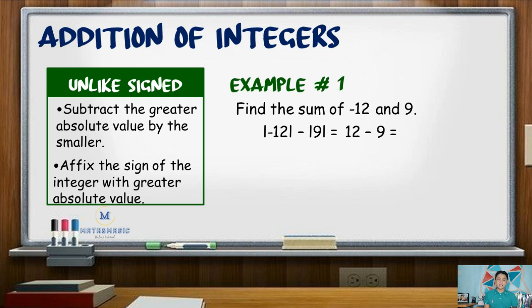Since the absolute value of negative 12 is higher, we copy the sign of 12, which is negative. Hence, the sum is negative 3.